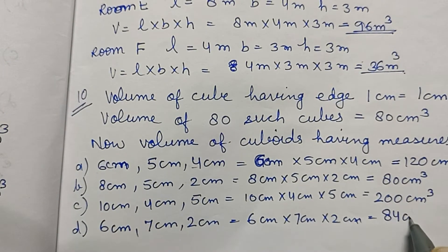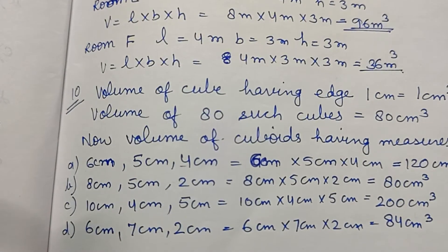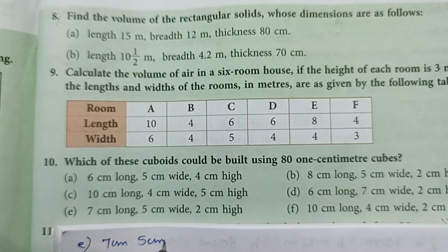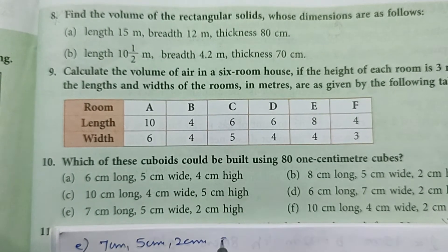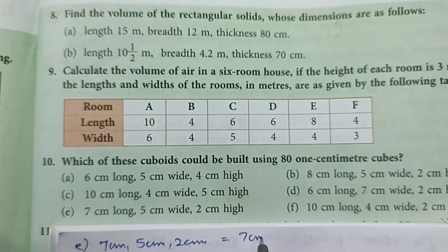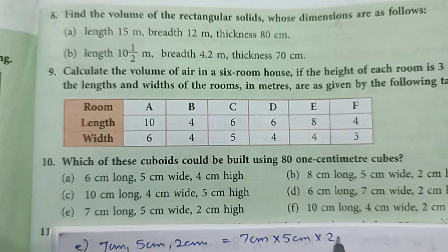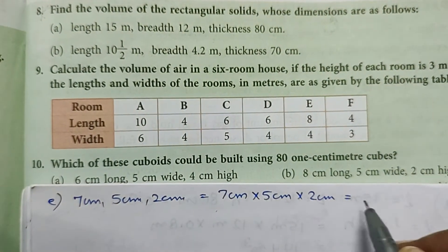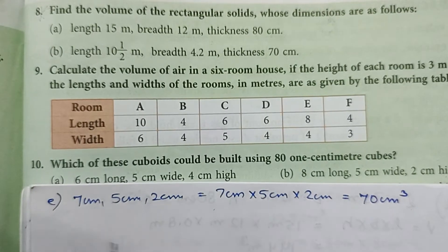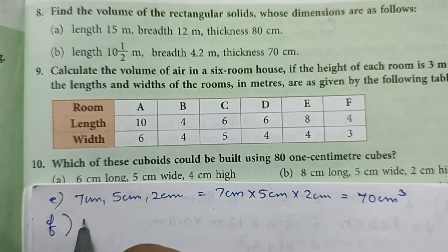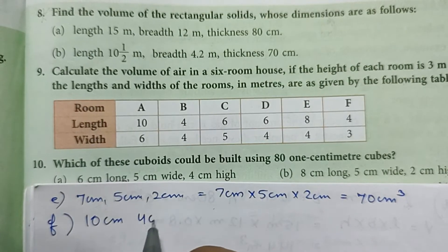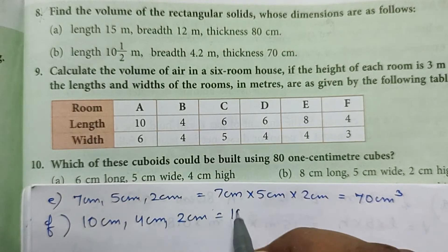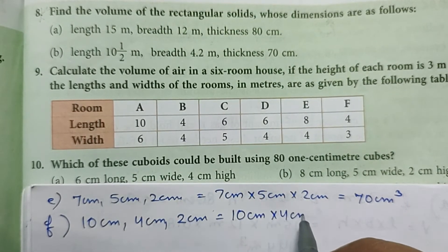Volume of cuboid D equals 84 centimeter cube. Cuboid E: dimensions are 7 cm, 5 cm, and 2 cm. Volume is 7 into 5 into 2 — 7 times 5 is 35, and 35 times 2 is 70 centimeter cube. Cuboid F: dimensions are 10 cm, 4 cm, and 2 cm.